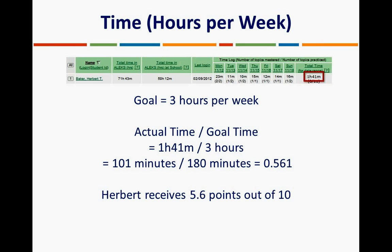Let's look at the time-based grading example. The goal is three hours per week. Looking at an individual student, the total time spent that week was one hour and 41 minutes, or 101 minutes. Three hours equals 180 minutes. Calculating 101 divided by 180 gives 0.561. On a 10-point scale, Herbert would receive 5.6 points out of 10. You do need to convert total time into minutes, but that's relatively easy.